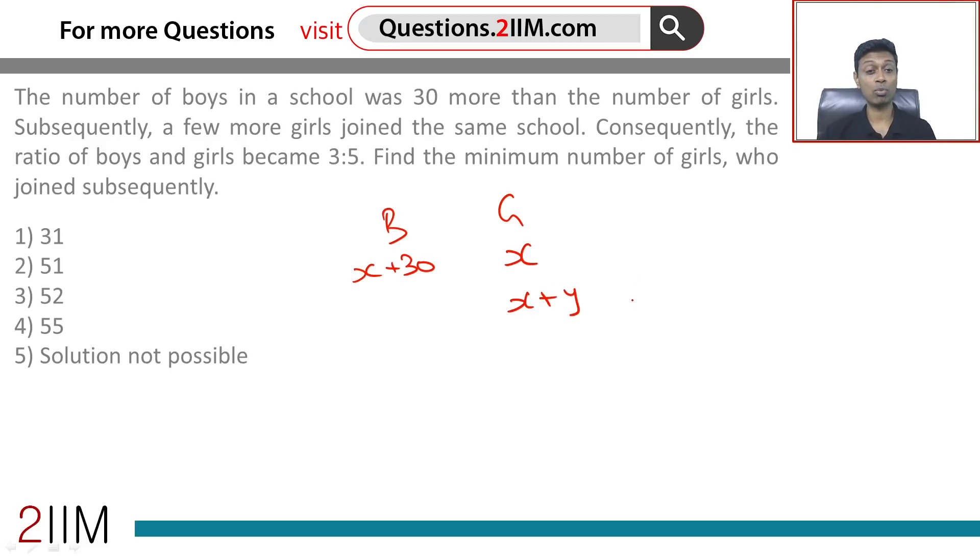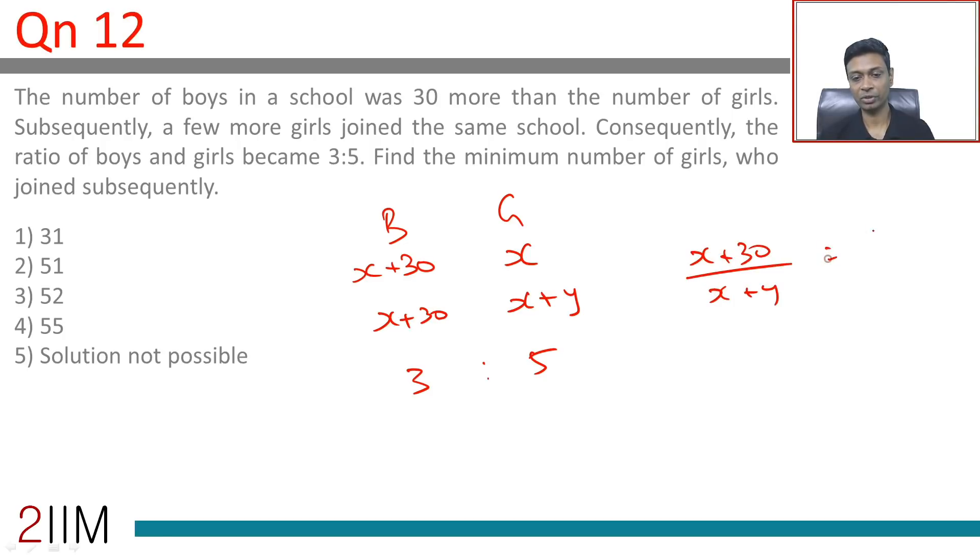Consequently, the ratio of boys and girls became 3 to 5. Boys stays at x plus 30. So x plus 30 by x plus y equals 3 by 5. We need to find the minimum number of girls who joined subsequently, which is minimum y.